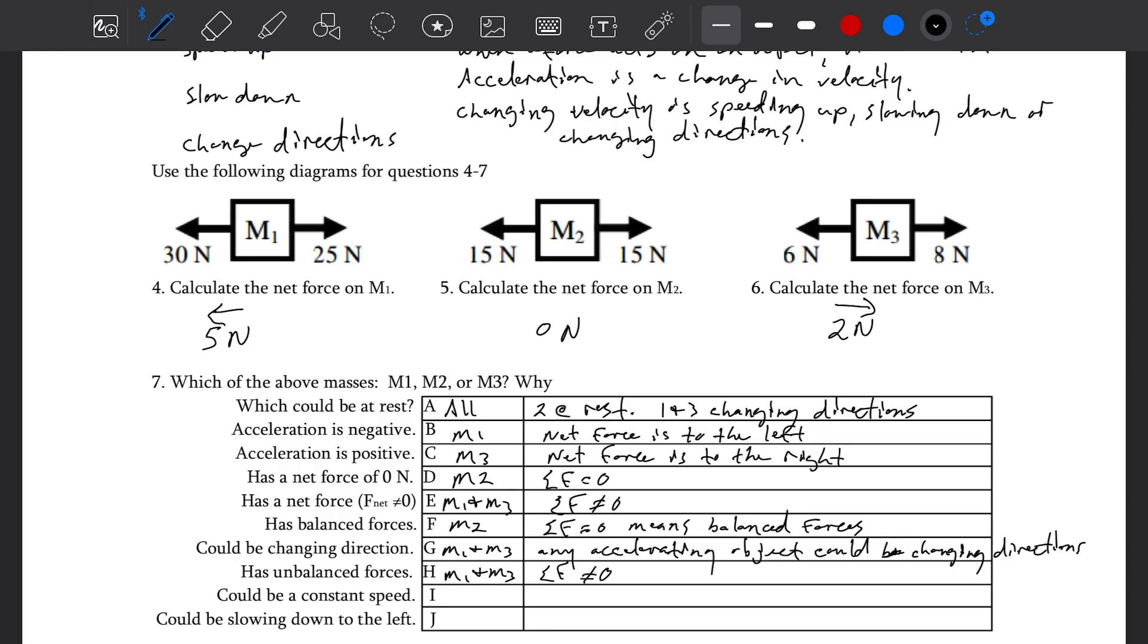If you have a non-zero net force, you have unbalanced forces. Could be a constant speed, only M2. Constant speed comes from balance forces. Could be slowing down to the left, M3. If it's moving to the left and its net force is to the right, it would be slowing down. Because the velocity and acceleration are in opposite directions. Now if it's moving to the right, it's speeding up.